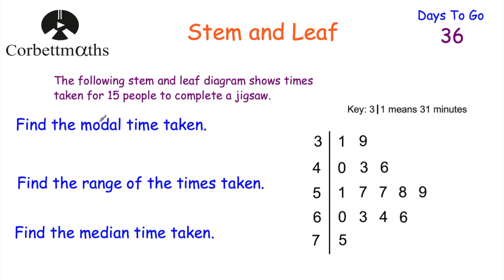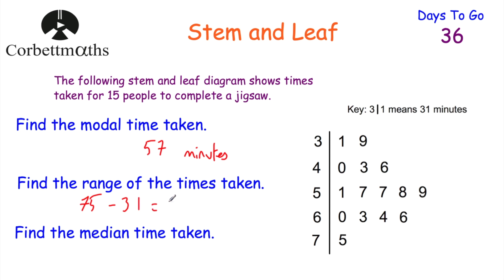For the mode: looking at the values, we can see 57 and 57 — there are two 57s, and no other numbers repeat. So 57 minutes is the mode. For the range: it's the longest time subtract the shortest time — 75 minutes subtract 31 minutes — which equals 44 minutes. So the range of times taken is 44 minutes.